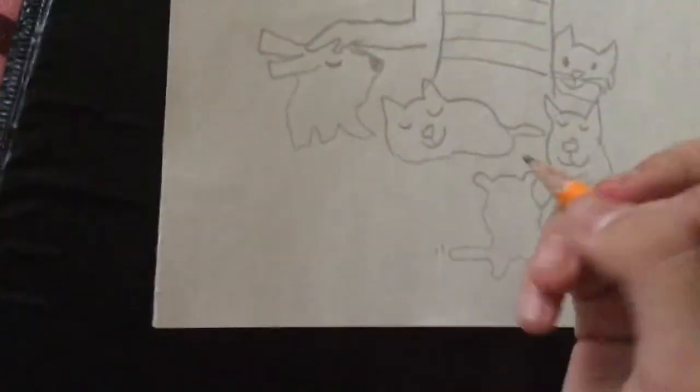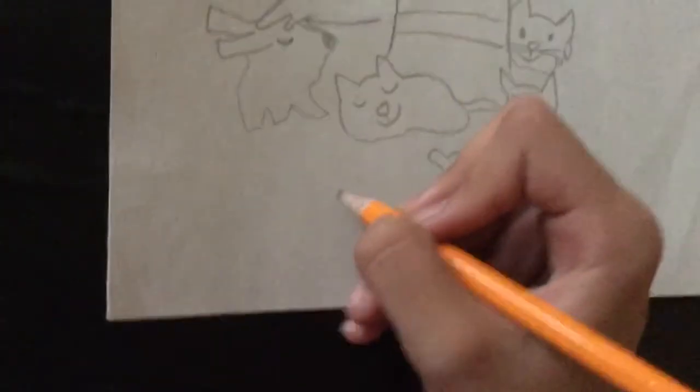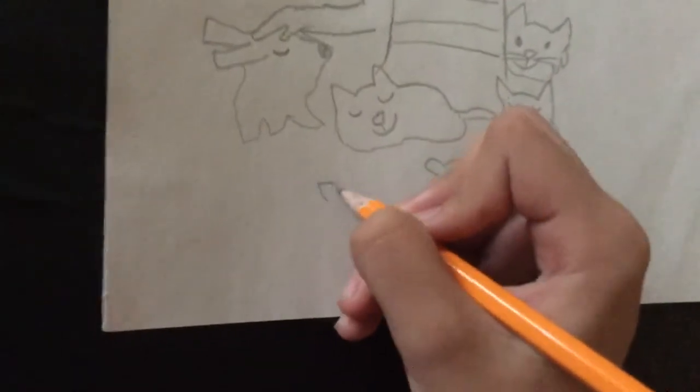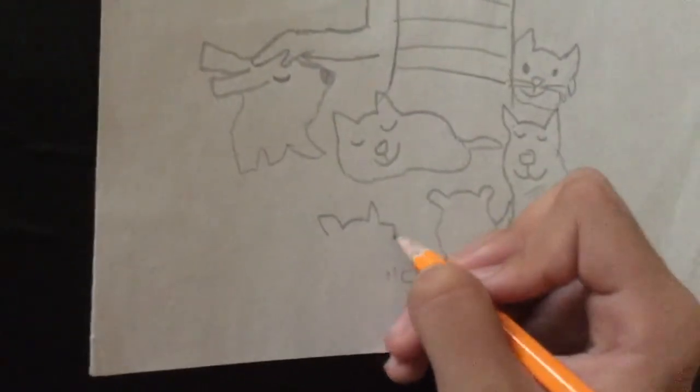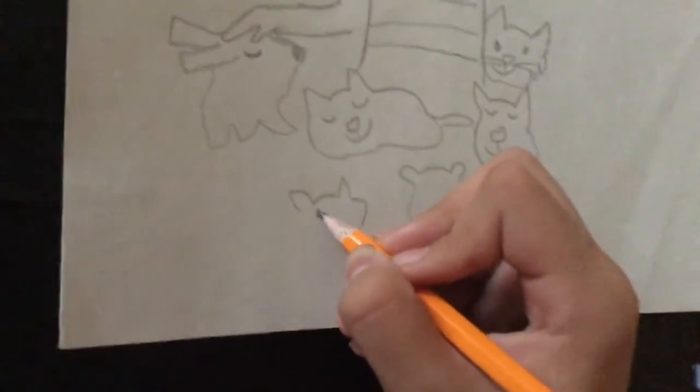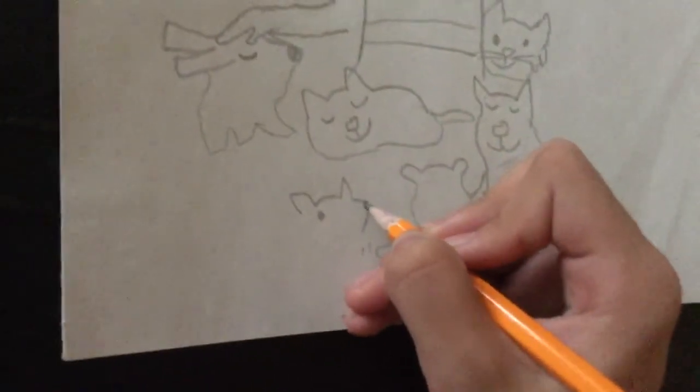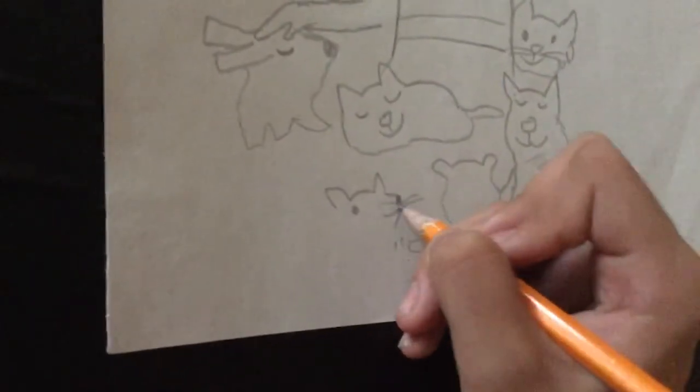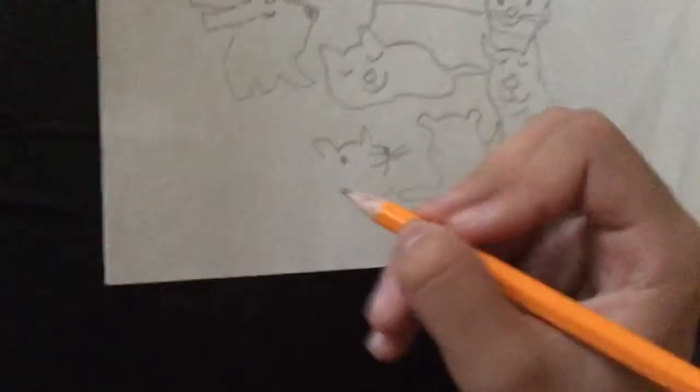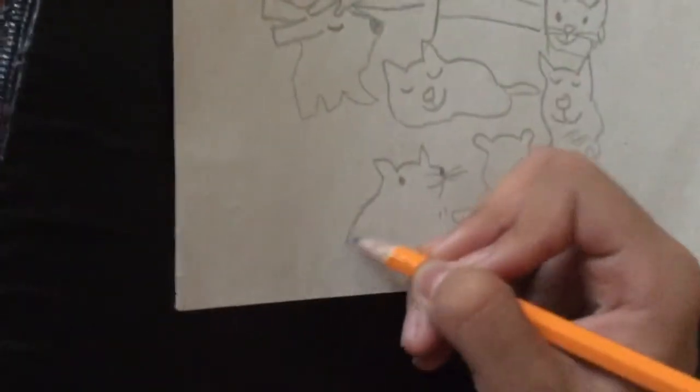Next you draw another cat over here. There's an eye and then a nose, and then there you go. Then you go down.